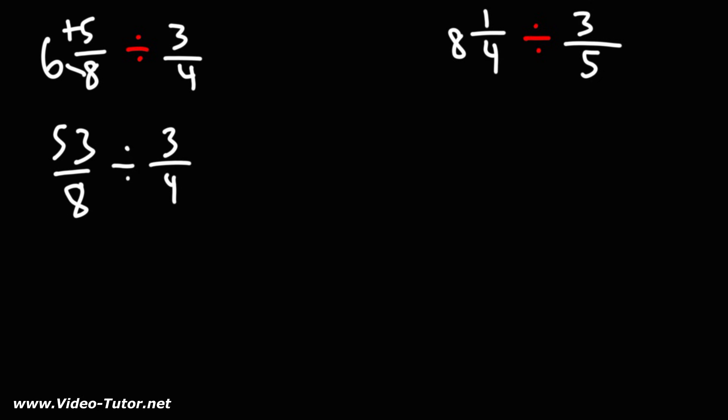Now, to convert this division problem into a multiplication problem, we need to use the expression keep-change-flip. So we're going to keep the first fraction the same, change division to multiplication, and flip the second fraction.